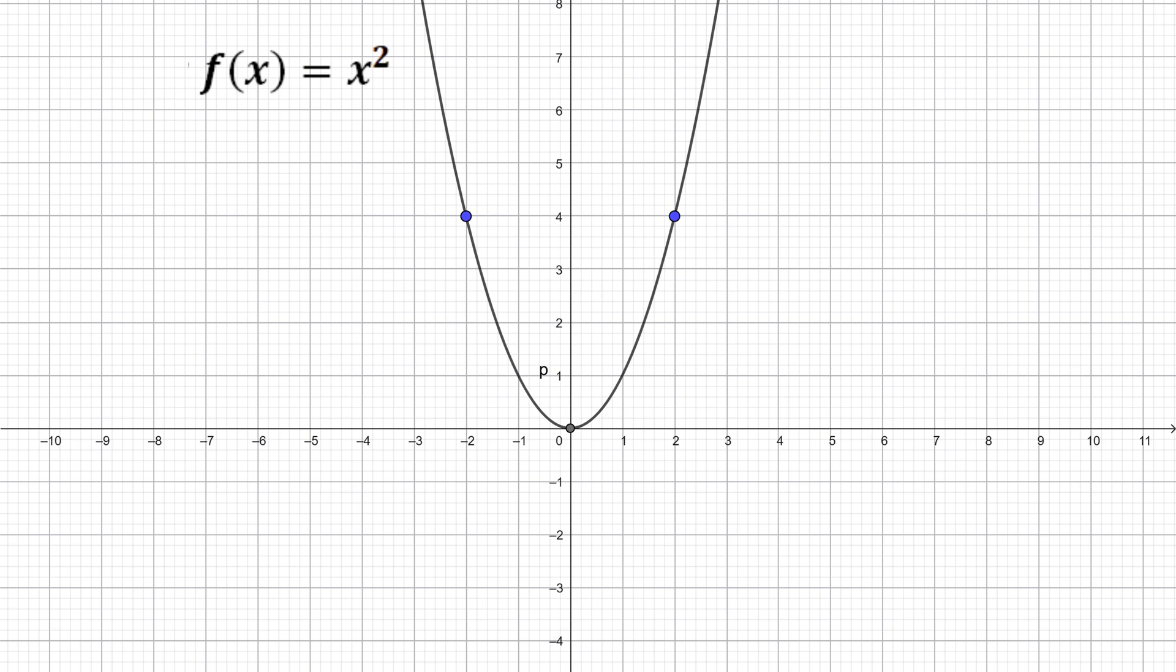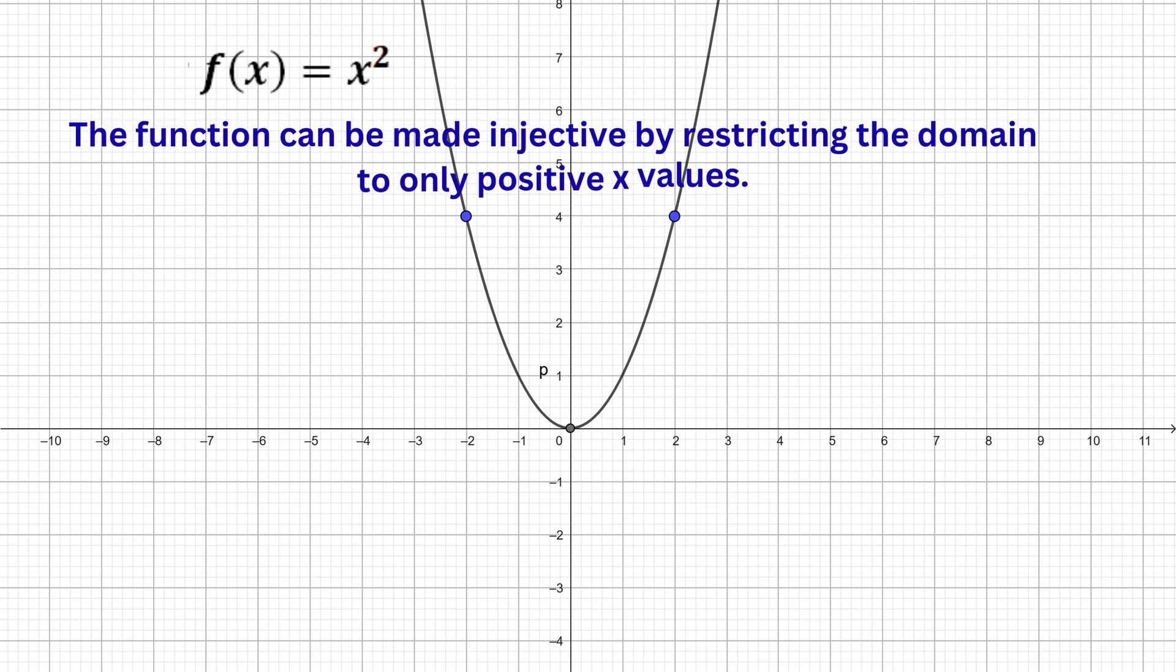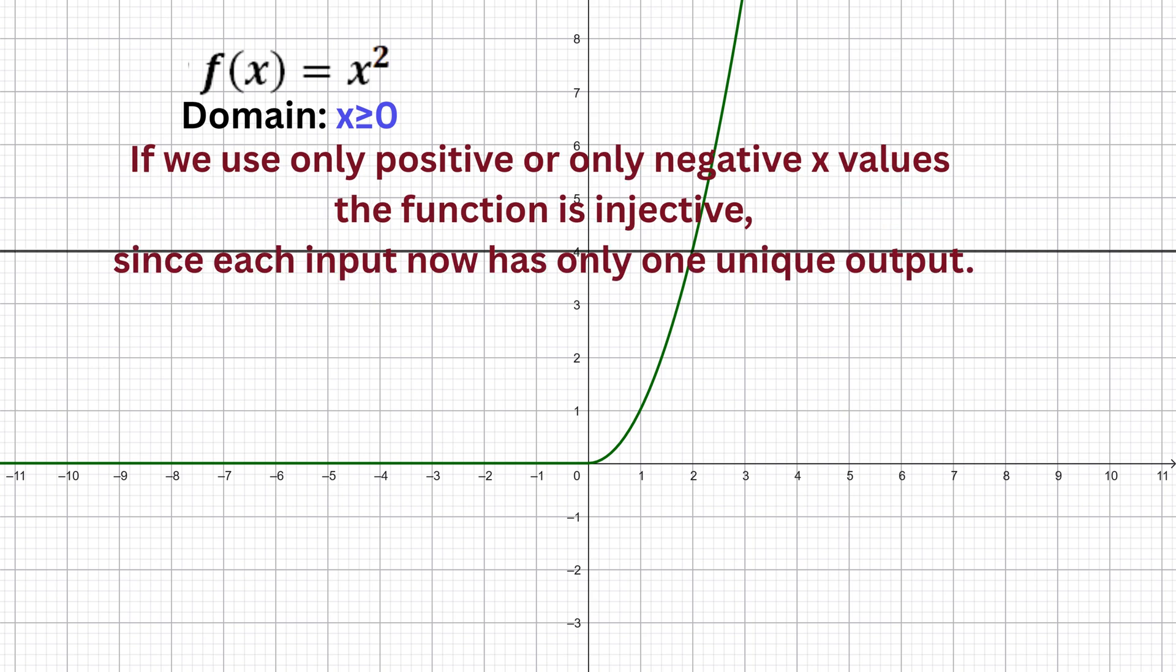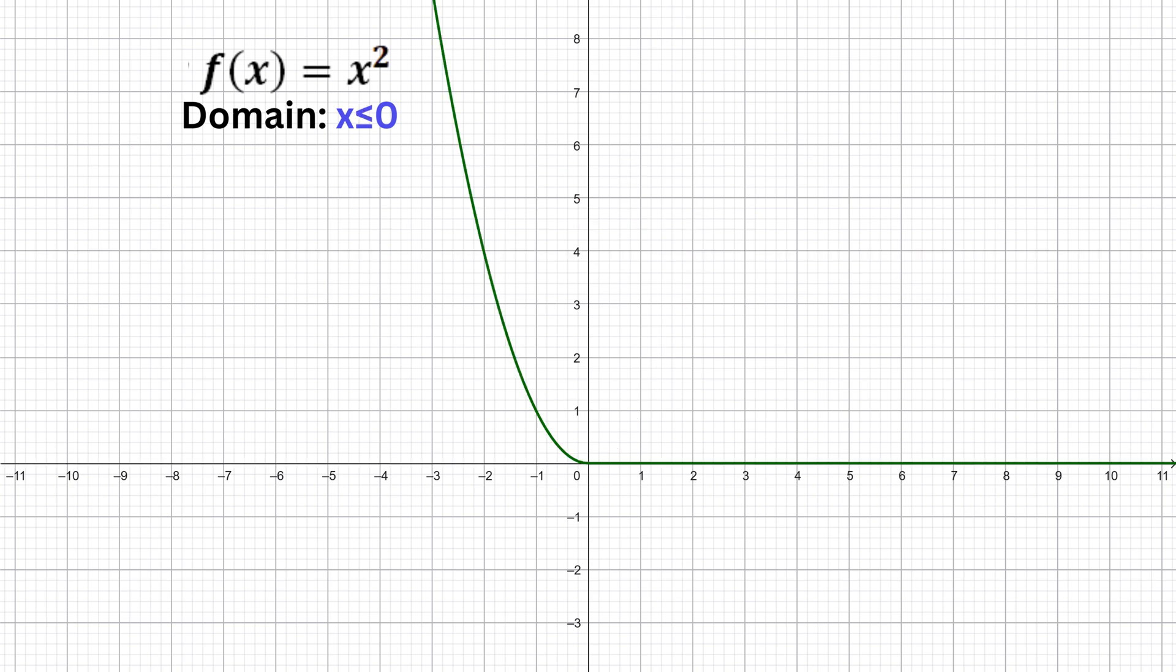Now you might be wondering, if f of x equals x squared is not injective, can we make it injective somehow? The answer is yes by restricting its domain. The reason this function fails the one to one test is because for every positive x, there's a matching negative x that gives the same y value. For example, both 2 and negative 2 give 4. But if we only allow x values greater than or equal to 0, we're looking at just the right half of the parabola. Now every input gives a unique output. The horizontal line will cut the graph only once. That means f is injective when the domain is restricted to x greater than or equal to 0. In the same way, we could also restrict the domain to x less than or equal to 0, the left half of the parabola.